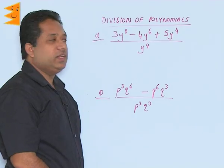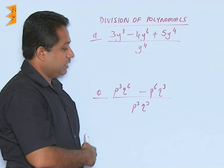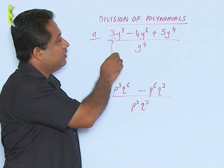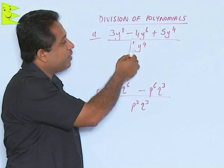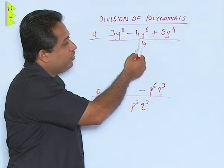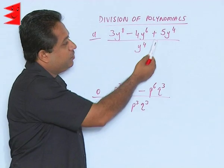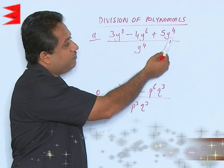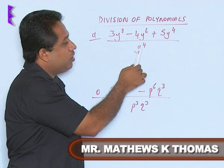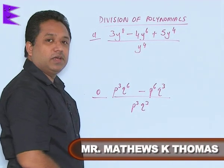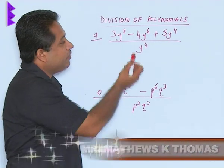Here we are going to divide a polynomial by a monomial: (3y⁸ - 4y⁶ + 5y⁴) divided by y⁴.